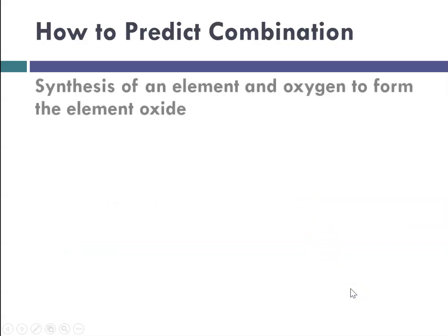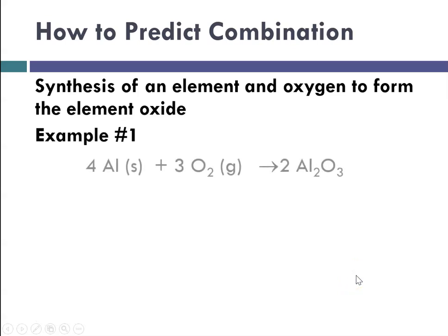So a couple of examples of an element and oxygen forming the element oxide. Example 1. Aluminum plus oxygen. And I've balanced this for you. But where did this come from, the Al2O3? So we have to remember that aluminum forms a plus 3 ion. It's a group 3 metal. And oxygen is a group 6 nonmetal, so it always forms a negative 2. 6 minus 8 is negative 2. And then we crisscrossed the charges to get these subscripts. And then, as you'll see, I went in and balanced it.